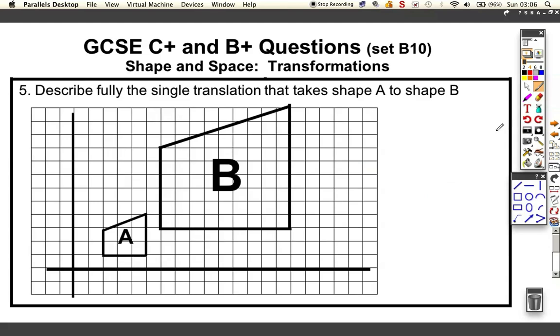And here we go. So now we've got to describe fully the transformation. Describe fully the transformation that takes A onto B. Well, usually these are three marks, so you have to say three separate points. It's obviously an enlargement. Okay, so that's worth one mark.